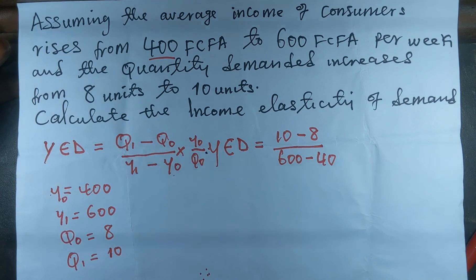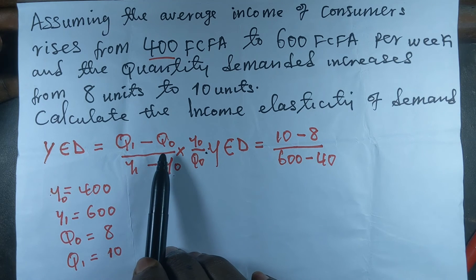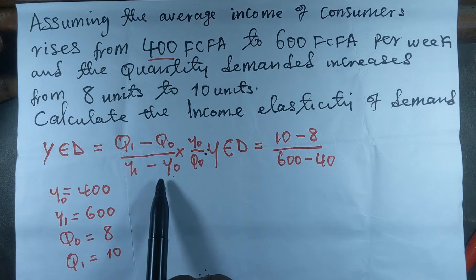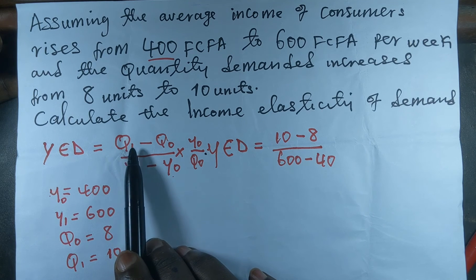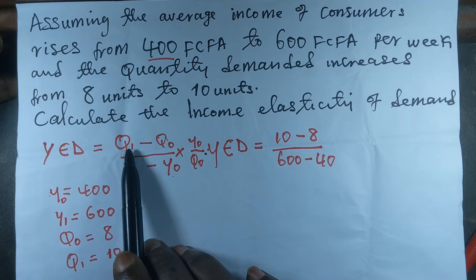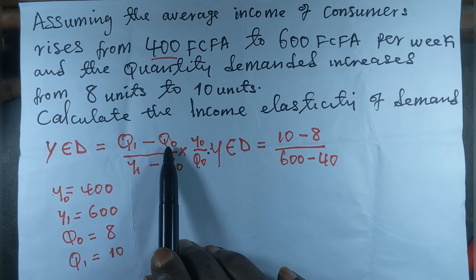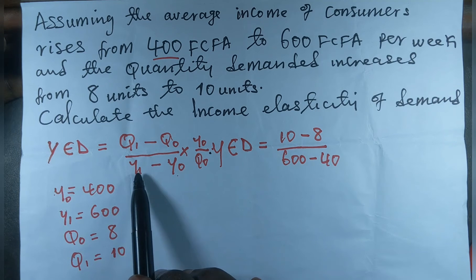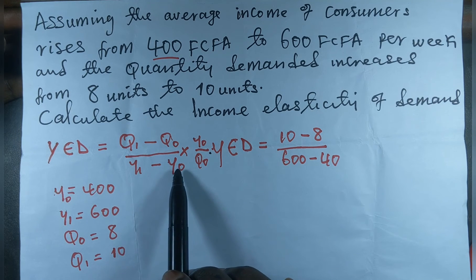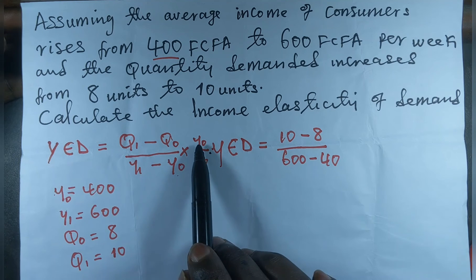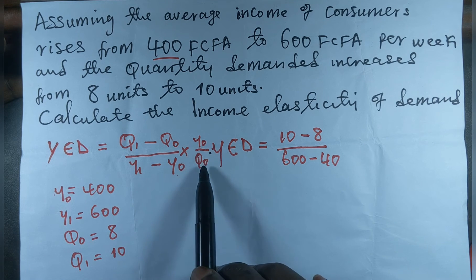We are going to use a formula to calculate the income elasticity of demand. The formula is: change in quantity demanded divided by change in income. That is the final quantity demanded minus the initial quantity, divided by the increase in income minus the initial income, all multiplied by the initial income divided by the initial quantity demanded.